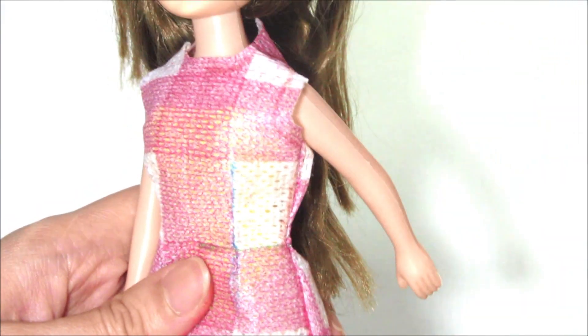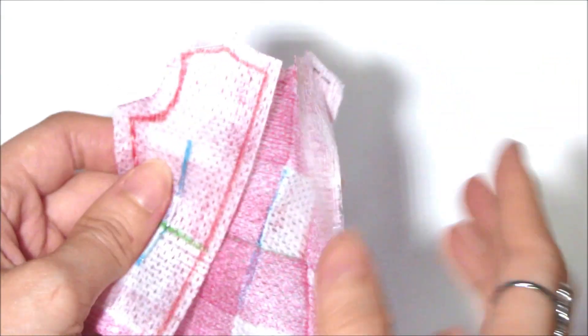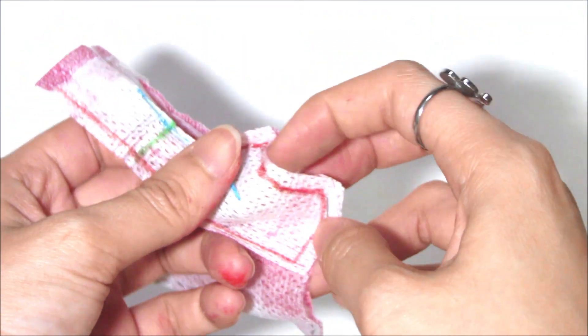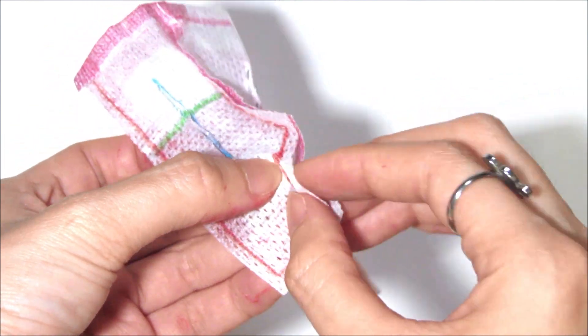So there is still some allowance on the sleeve, and we're going to take care of that. The easiest way is to just interlock the edge, fold it in, and then sew it down with a stitch.